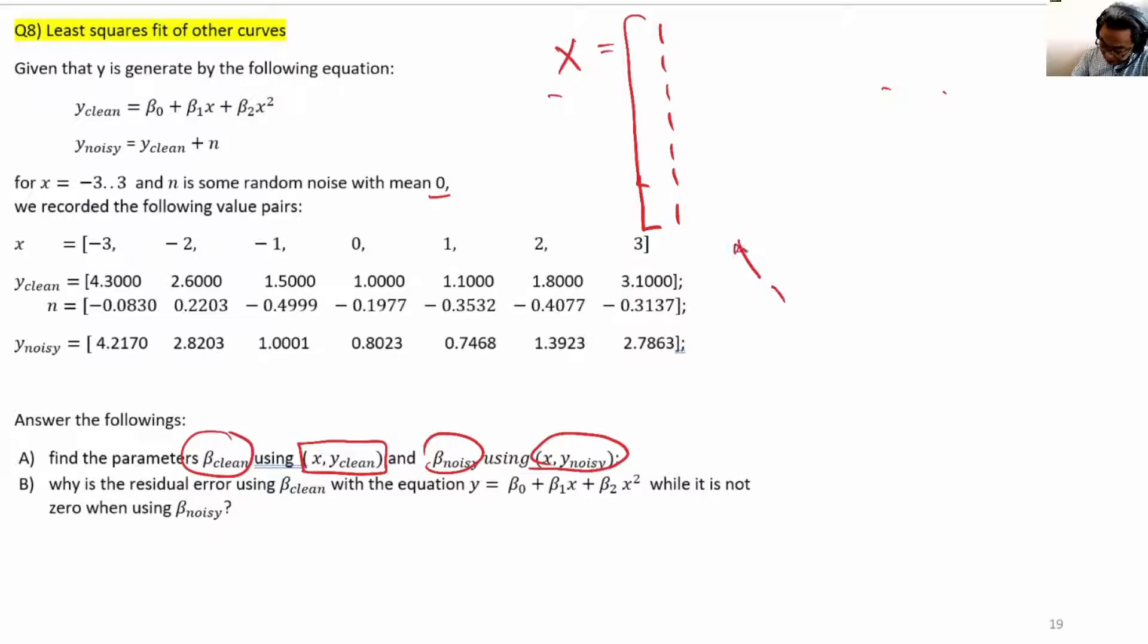The second column is for x, and the third column will be for x squared. So the second column will begin with minus three, minus two, minus one, zero, one, two, three.